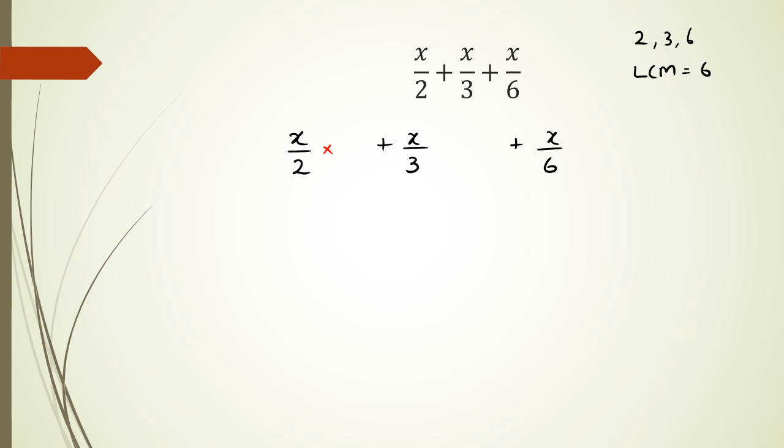With the first fraction, I need to multiply the denominator by 3 and the numerator by 3. The second fraction, I need to multiply the denominator by 2 and the numerator by 2, because this is all going to give me a common denominator of 6. So doing this, x times 3 is 3x over 6 plus x times 2 is 2x over 6, plus x over 6. I basically have 3x plus 2x plus 1x and the whole thing over 6. This could be simplified as 6x over 6.